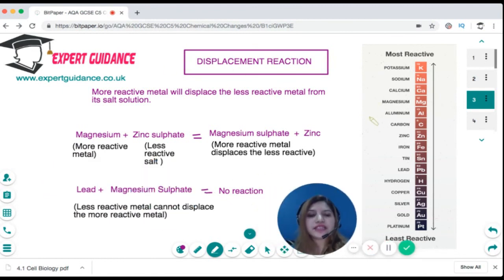Now what is the displacement reaction? So we can use the reactivity series to do a displacement reaction. Displacement reaction is where the most reactive metal will displace the less reactive metal from its salt solution. So most reactive metals are generally found at the top and the less reactive at the bottom.